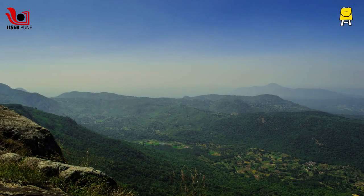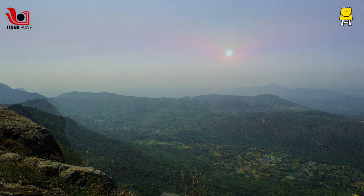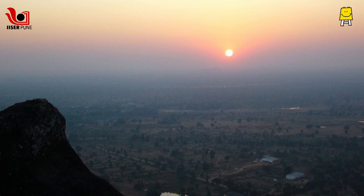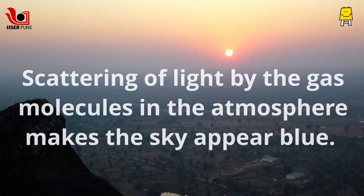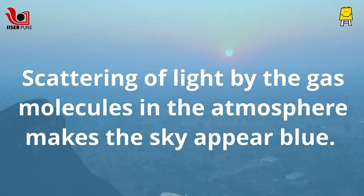If you look at the sky, it looks blue most of the time and the same sky appears orange or red or orangish red at sunrise and sunset. Scattering of light by the gas molecules in the atmosphere makes the sky appear blue.